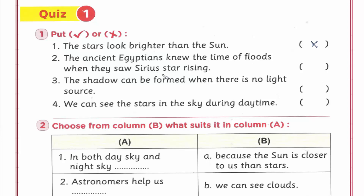The shadow can be formed when there is no light source. False - طبعا false. Shadow عشان يتكون لازم يكون فيه light source و surface و object.